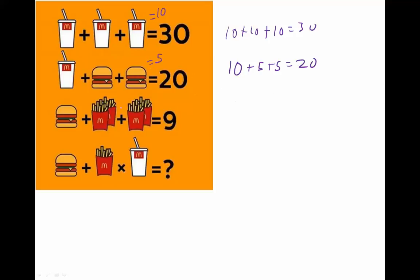Again, using our information for the next line, we have 5 plus, and then we've got two packs of fries plus two packs of fries. Well, the only way for that to work is if two packs of fries was equal to 2. So that's got to be 5 plus 2 plus 2 to make 9.